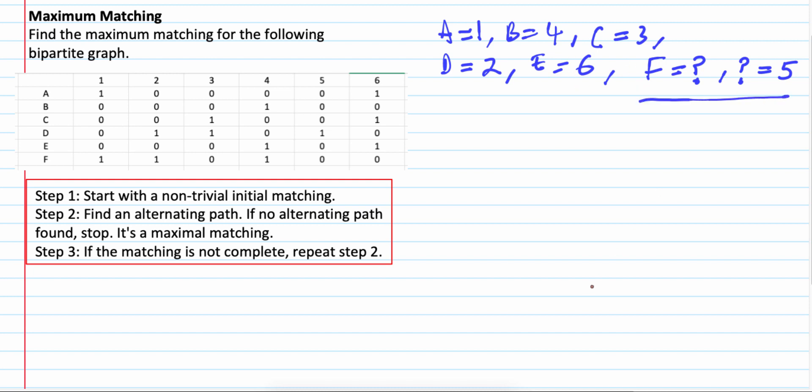So we try to solve this one. Step number 2, we find an alternating path. So for F. F is what? F is 1, 2, 4. We have 3 choices. So if F is 1.